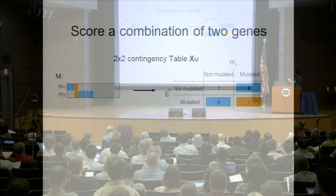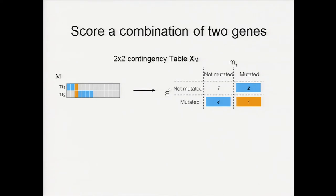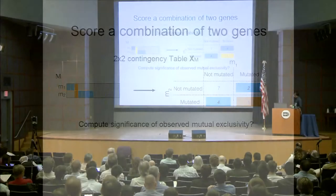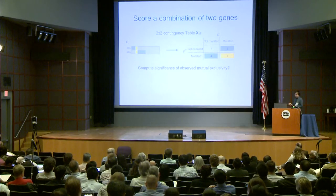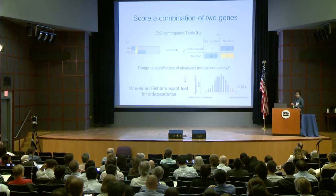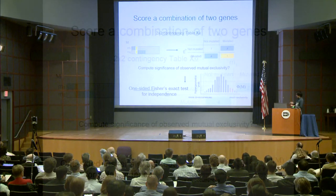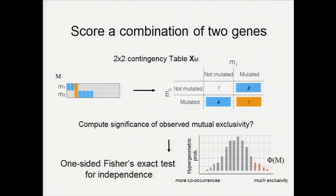We turn this mutation matrix into a 2×2^K contingency table XM. Each cell in this table tells you the number of samples where the genes are mutated or not. The orange cell tells you the number of samples where both genes are mutated. The blue cells tell you the number of samples mutated in either one of the genes, which is the exclusive mutation. We ask: how do you compute the significance of observed mutual exclusivity?